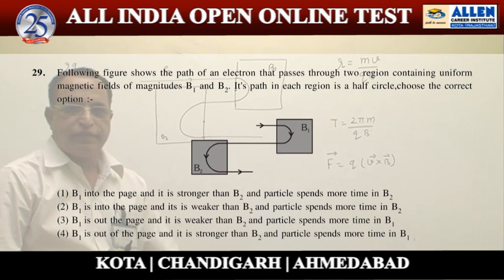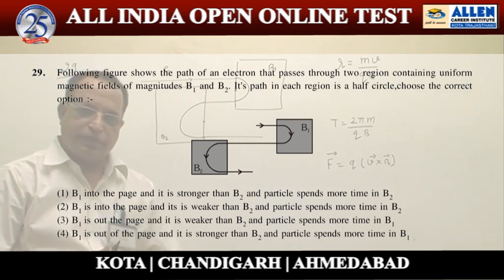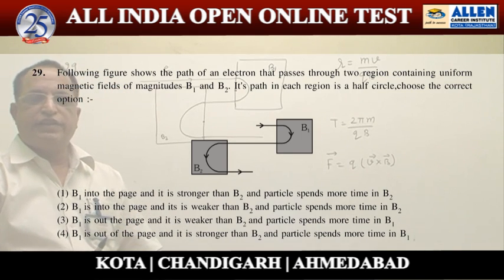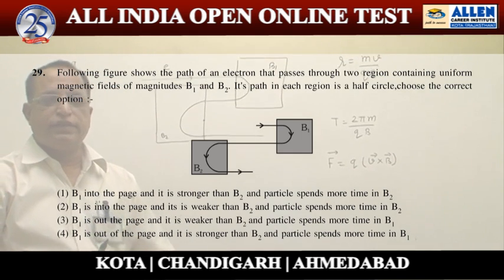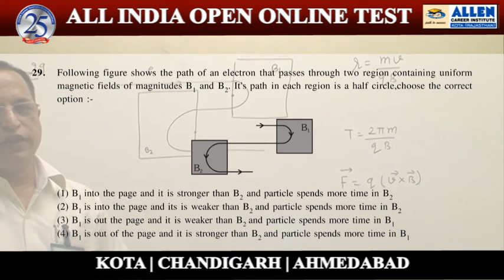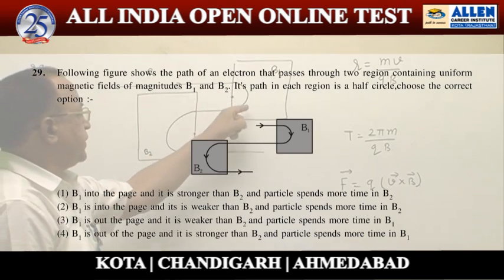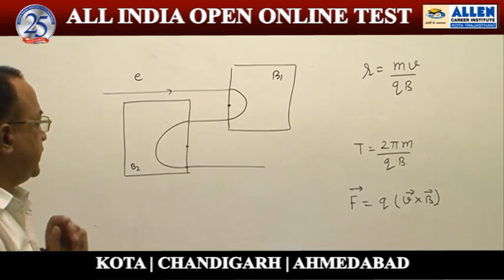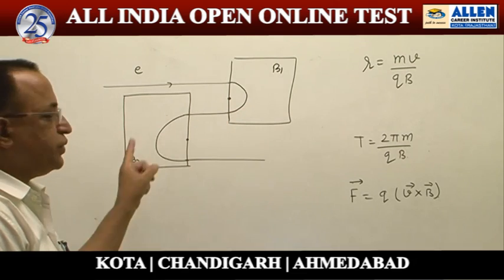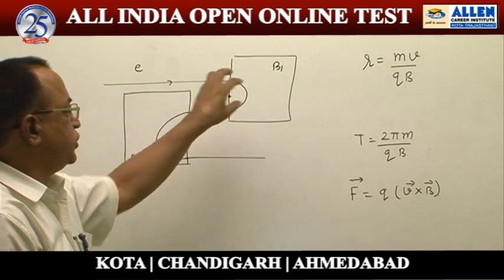Problem number 29 is related to motion of a charged particle in a magnetic field. When a charged particle enters a magnetic field at right angle, it follows a circular path. These two paths are semicircular paths here. In these two regions, the magnetic field is normal to the board.